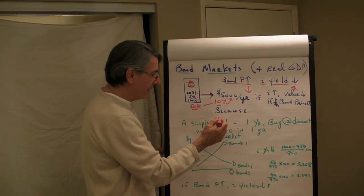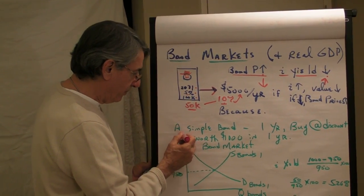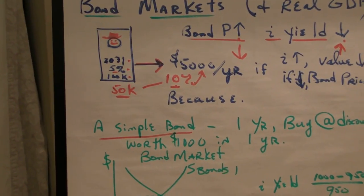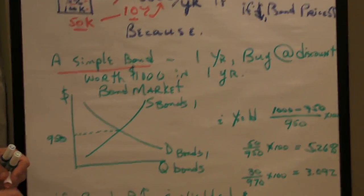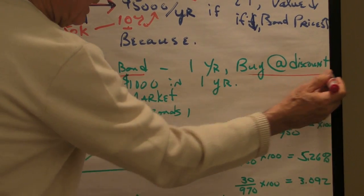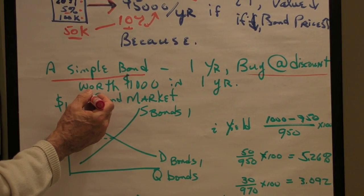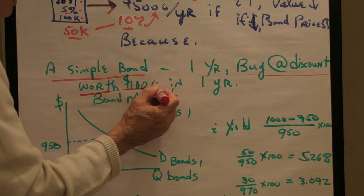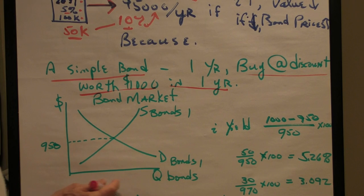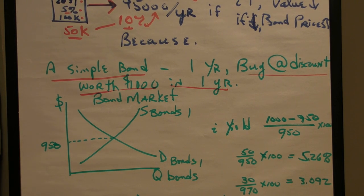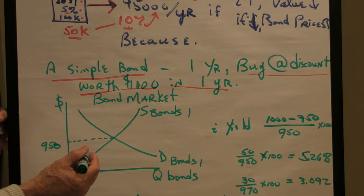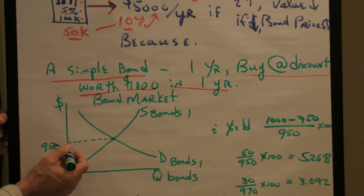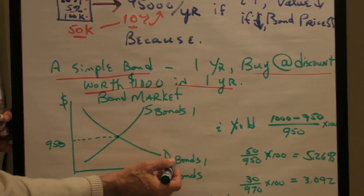Now, our textbook makes a very simple bond because it's simple and it's useful. It's a one-year bond that you buy at a discount. The bond, for whatever you pay for it, is worth $1,000 at the end of one year. So what determines the price you have to pay for this $1,000 bond? It's actually a bill. And it's supply and demand in the bond markets.